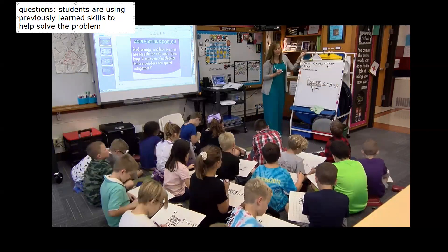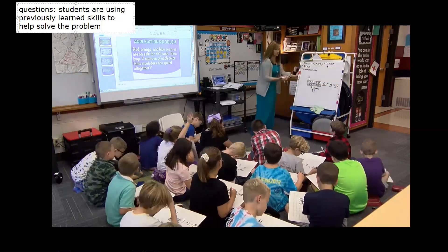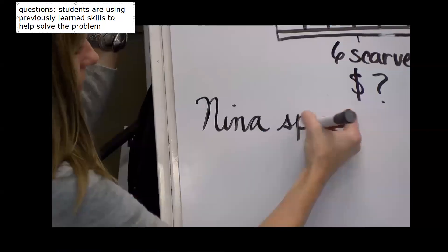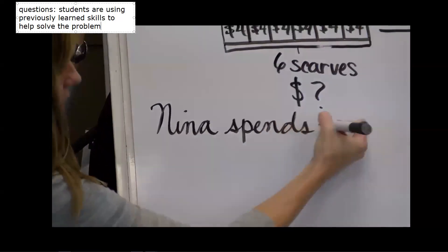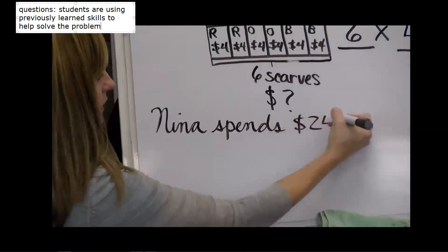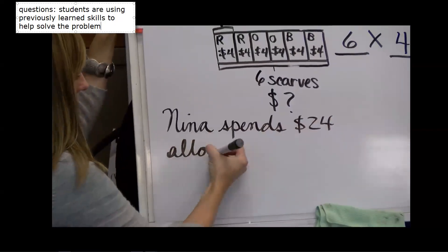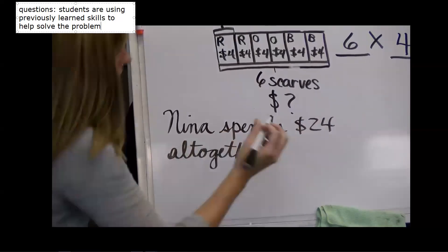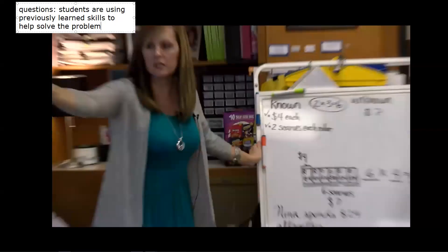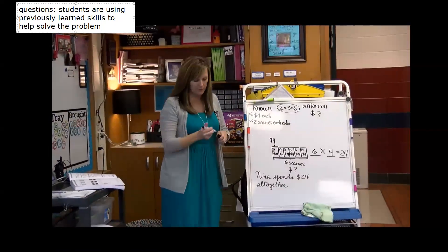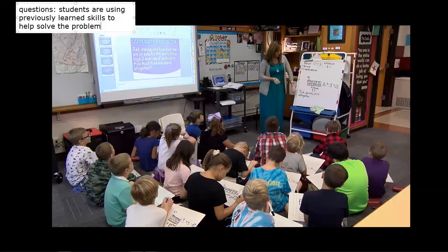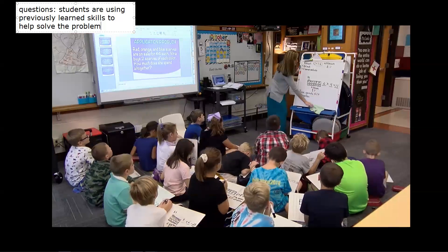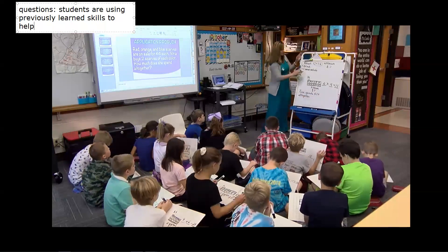So what does our complete sentence answer sound like? How much does she spend altogether? Twenty-four. Nina spends twenty-four dollars all together. You could say in all, but since our problem says altogether, I like to use as many words from the problem as possible. What do we call that when we do that? Restating. Restating. Nice job. All right. Erase, please.